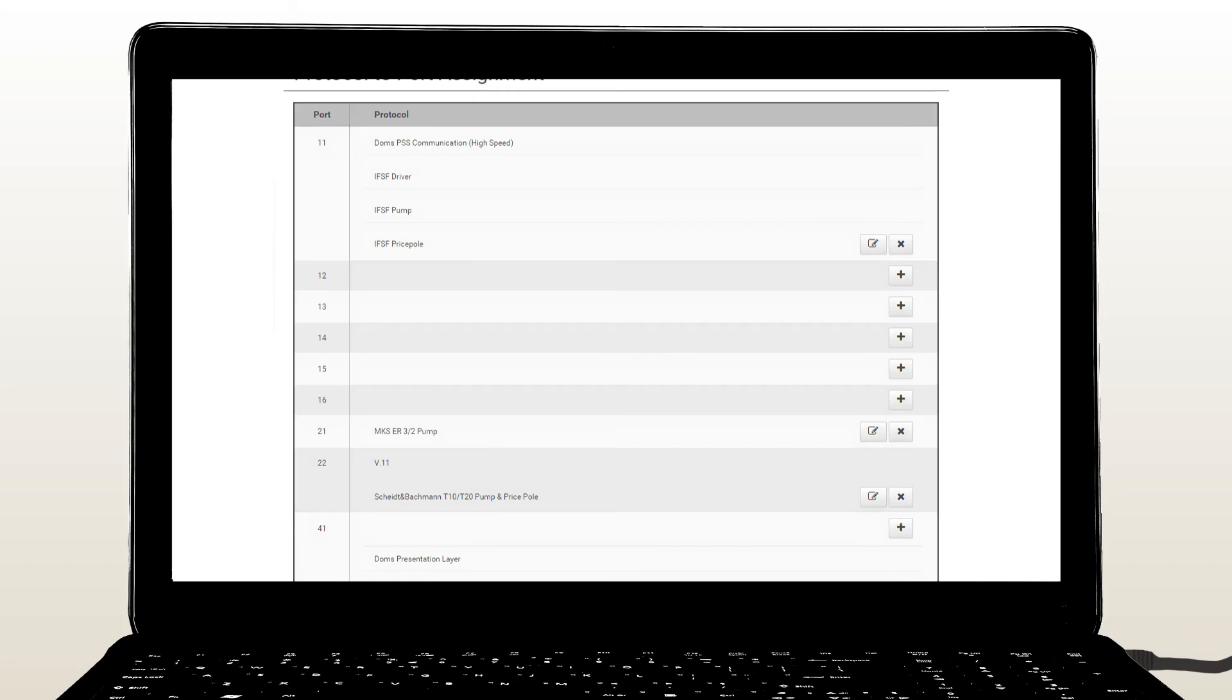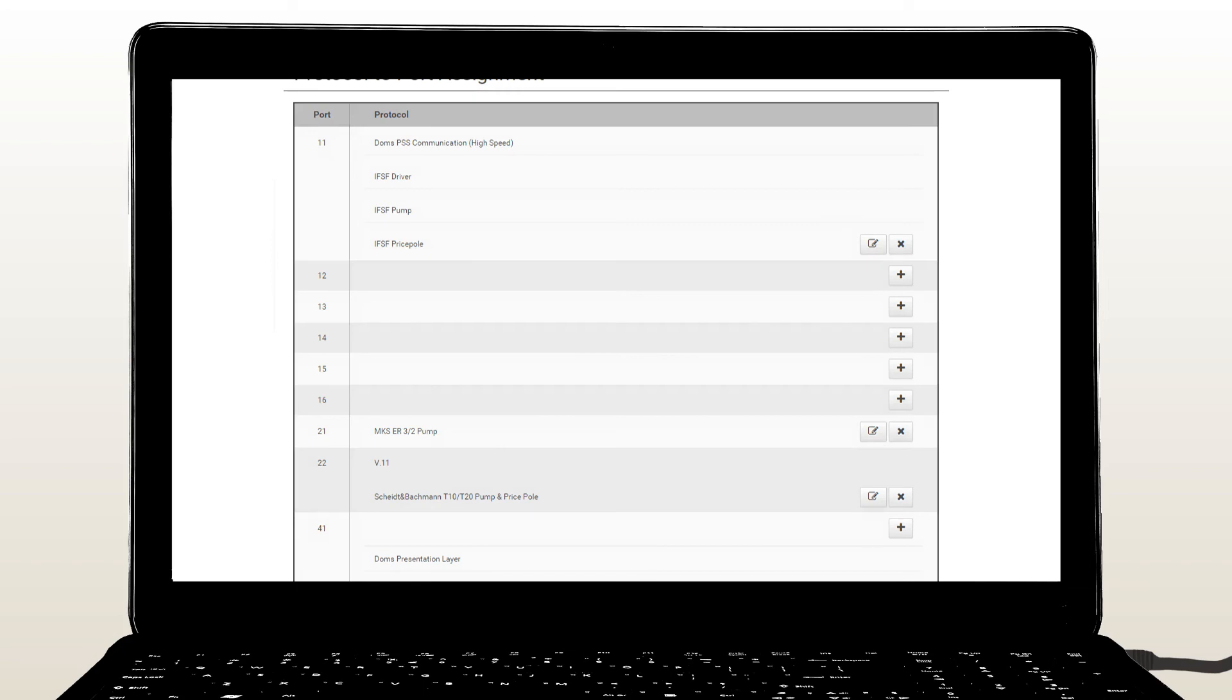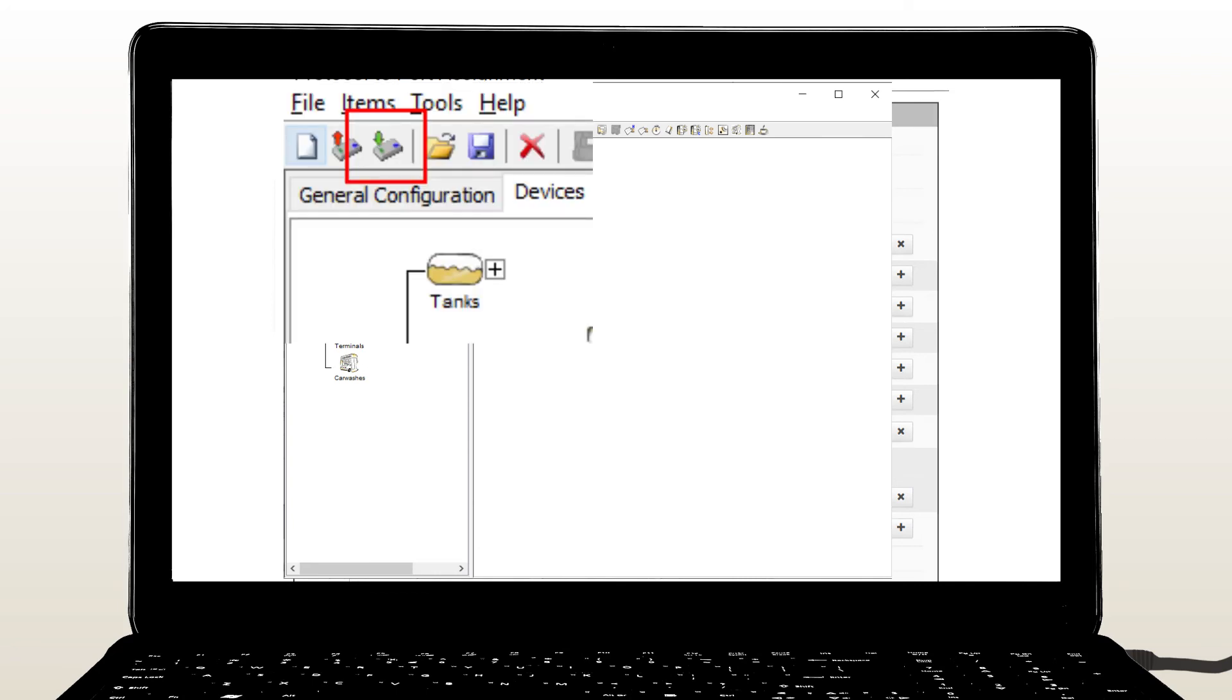Using your PSS configurator tool, open the configuration you saved earlier and then send it to the PSS using the IP address for port 42 and log on using the credentials you just created.